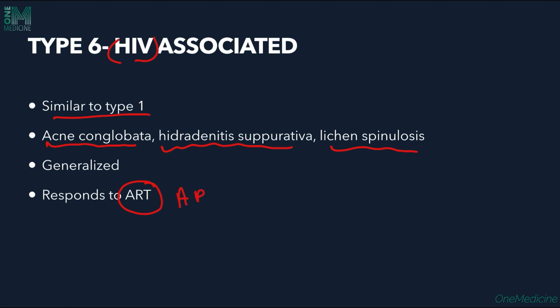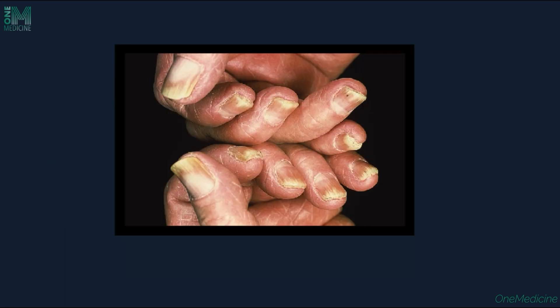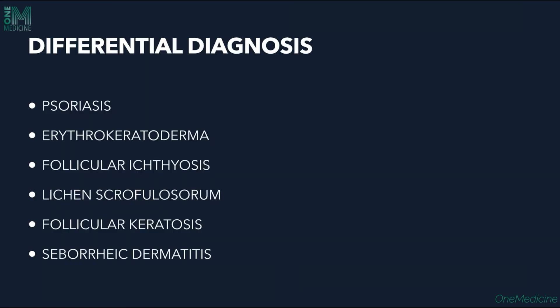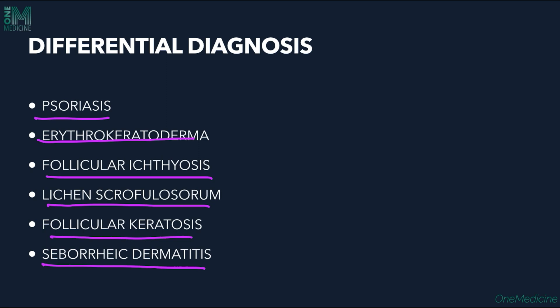Nail changes in PRP include thickening, subungual hyperkeratosis, brittle nails, and splinter hemorrhages. PRP Type 3 shows orange-red erythema with cephalocaudal spread and follicular plugging. Differential diagnosis includes psoriasis, which presents with silvery-white scales and erythematous plaques on extensor aspects with itching, as well as erythrokeratoderma, follicular ichthyosis, lichen scrofulosorum, follicular keratosis, and seborrheic dermatitis.